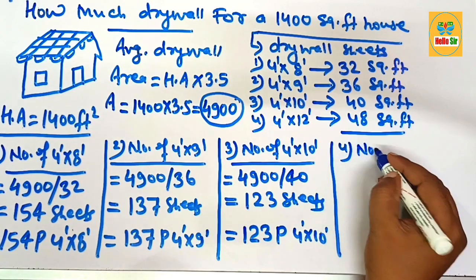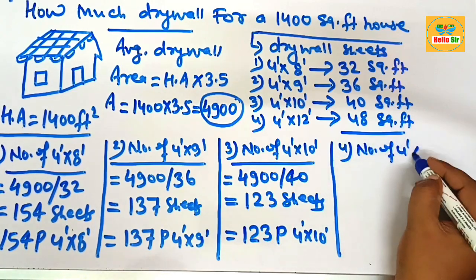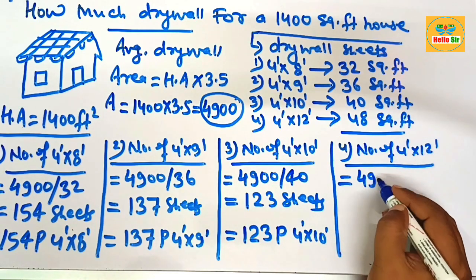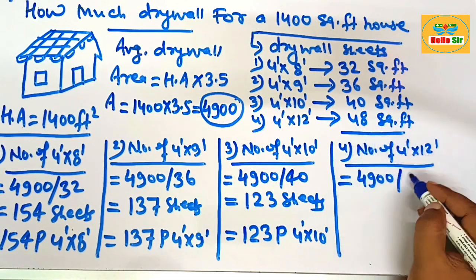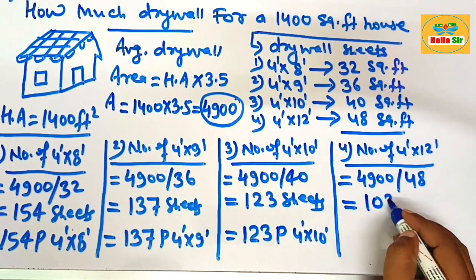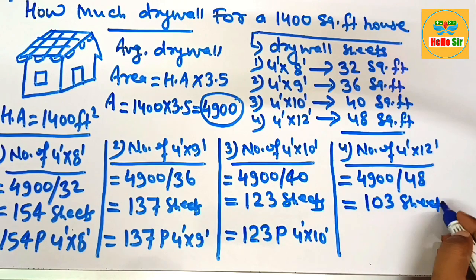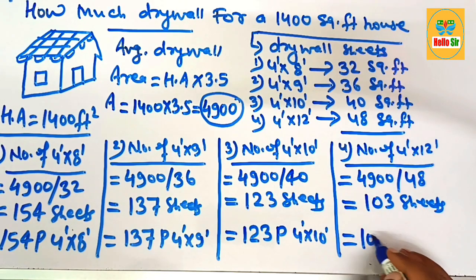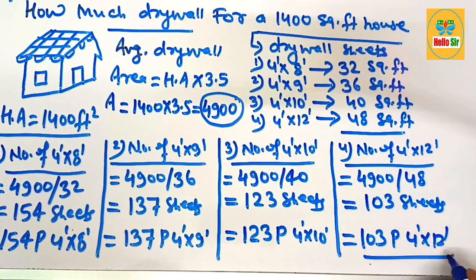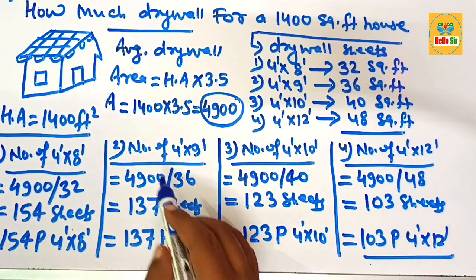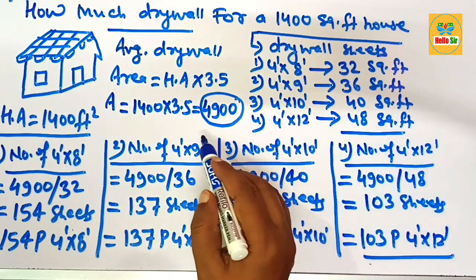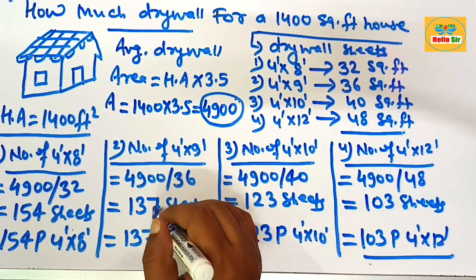For the number of 4-foot by 12-foot drywall sheets, you calculate using a similar method: 4900 divided by one sheet area of 48. After division, this comes to about 103 sheets. So you need approximately 103 pieces of 4-foot by 12-foot drywall sheet to cover that area. You can choose either 4×8, 4×9, 4×10, or 4×12 drywall sheet to cover that area. Thank you.